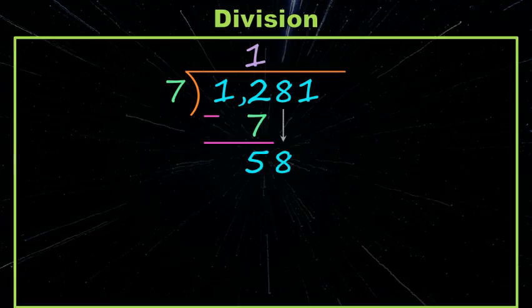Now we want to know does seven go into 58? Sure it does. How many times? Well that's one of our favorite multiplication facts, that's seven times eight, which gives us 56. And that goes under our 58 and then we subtract. 58 minus 56 gives us two.